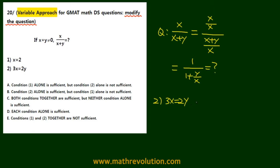Now, condition 2 tells us that 3x is equal to 2y, meaning that y over x is equal to 3 over 2.